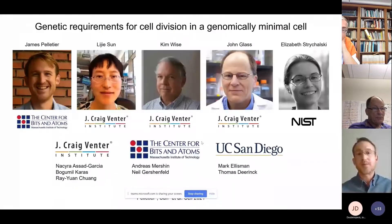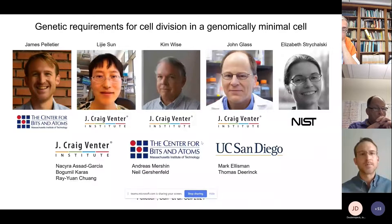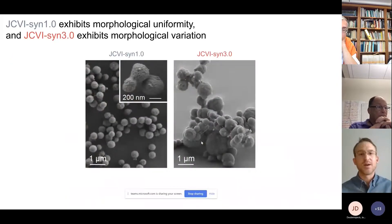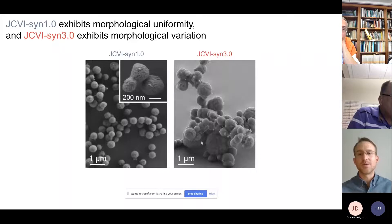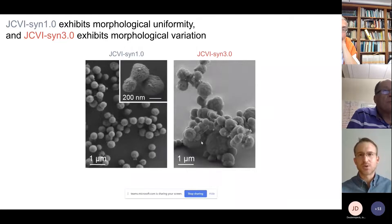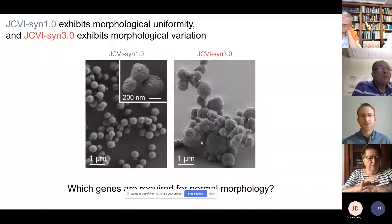I'll now present work on behalf of a collaboration between a team at the JCVI led by John Glass, Elizabeth Strachowski at NIST, and teams at the MIT Center for Bits and Atoms and UC San Diego. These two scanning electron micrographs of SYN 1.0 and SYN 3.0 are shown at the same scale. SYN 1.0 exhibits significantly less morphological variation — the cells are about the same size and shape, all several hundred nanometers in diameter. Whereas SYN 3.0 exhibits more morphological variation; some cells are greater than several microns in diameter. They still constrict, but that constriction is less controlled. So a question motivating this work is what genes are required for normal morphology?